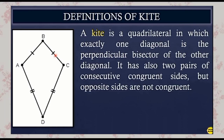A kite is a quadrilateral in which exactly one diagonal is the perpendicular bisector of the other diagonal. It also has two pairs of consecutive congruent sides, but opposite sides are not congruent.